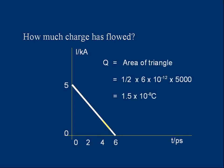And here's the answer. The charge is represented by the area under the current time graph. So if I work out this area, I've got the charge. Area, half base times height. Half, the base is 6 picoseconds, 6 times 10 to the minus 12. The height is 5 kiloamps, 5,000. And that gives us a charge of 1.5 times 10 to the minus 8 coulombs.